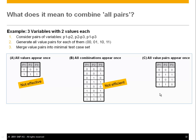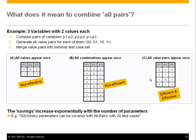All value pairs means you can take any pair of parameters, say P2 and P3, and ask: where does P2=1 and P3=1 appear in the test? You find it in case two. Any combination of variables and their values will be found in the test matrix — guaranteed by the tool. The savings are exponential: 500 binary parameters can be covered with only 20 test cases, and 1,500 binary parameters with 24 test cases.